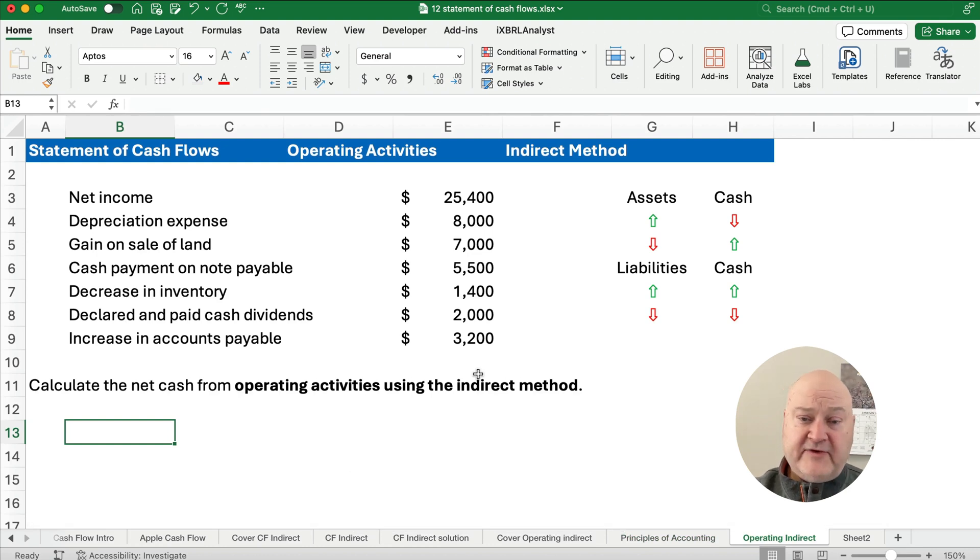We have net income, and we have some things we need to look at for adjustments. We're going to follow these rules. If we have assets going up, we're going to say they paid cash to make them go up, so the cash goes down. If assets go down, then cash goes up. So assets and cash are inversely related.